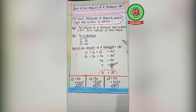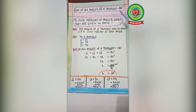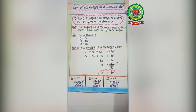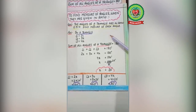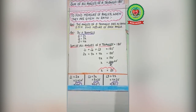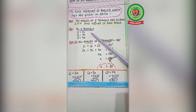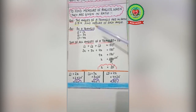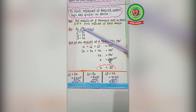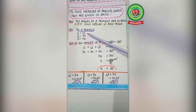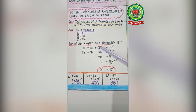In this question, the angles of the triangle are given in ratios. Earlier you found missing angles by applying the angle sum property directly, but now the angles are given in ratio form and we need to find the measure of each angle. So in a triangle, the angles are given as 2:3:4. Whenever angles are given in ratio, you will always write them as: angle 1 = 2x, angle 2 = 3x, and angle 3 = 4x.